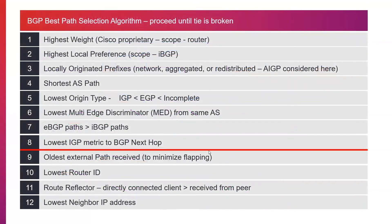At this point there's a decision: if you still have a tie between multiple routes, you must decide whether to support multipath. In leaf-spine architectures, ECMP supports multiple paths to the same router. If you support multipath, anything tied after step eight can be installed into the BGP routing table. If you want only a single route, you continue on. The next tiebreaker is the oldest external path received — whichever route has been known the longest is preferred to minimize flapping. A route that is coming and going is avoided in favor of a stable, long-installed route.